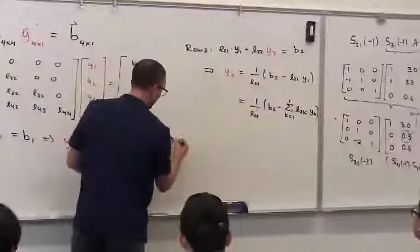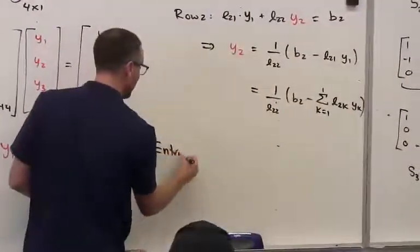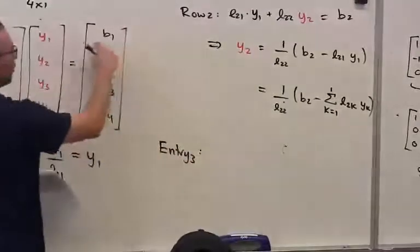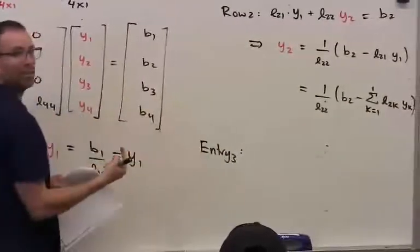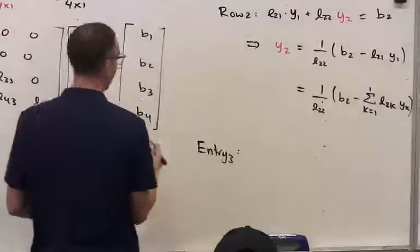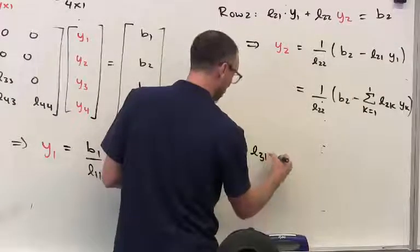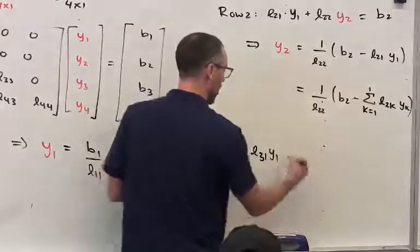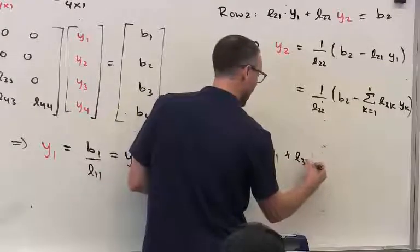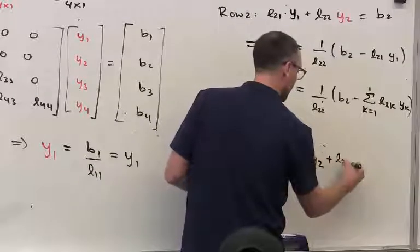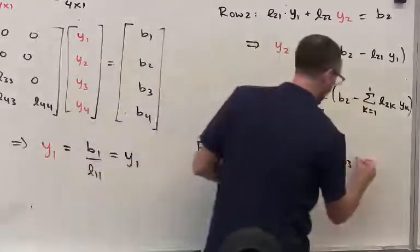So if we look at entry 3, I guess you could call it entry rather than row. Why does it not matter when you're talking about entry or row? What is each entry? It's a row, so they're identical to each other. So what is entry 3 in this case? My unknown Y3 is going to be 1 over L33 B2 plus L31Y1 plus L32Y2 plus L33 and then this is where I need my colors.